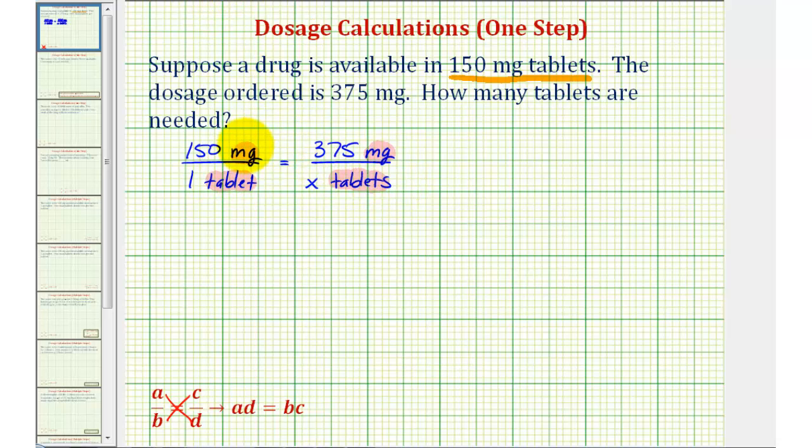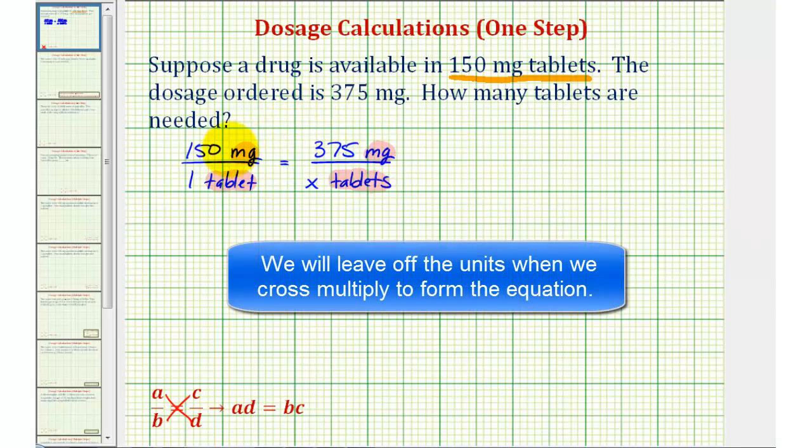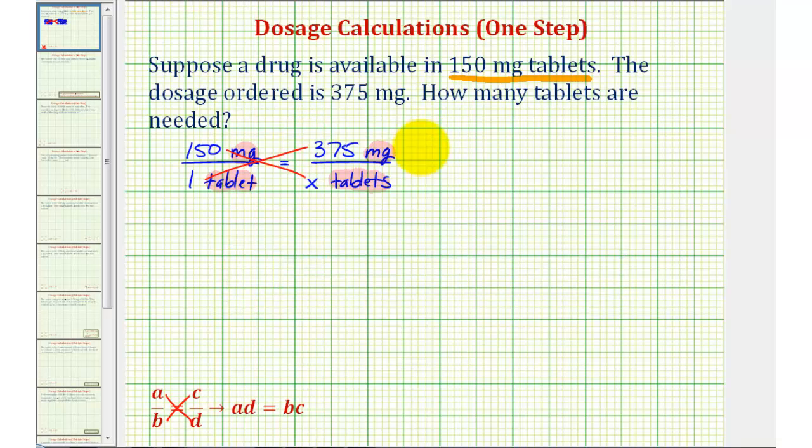When we cross multiply, it doesn't matter which cross product we do first. I prefer to find the cross product containing the variable. So 150 times X must equal 1 times 375. Again, 150 times X is 150X, which must equal 1 times 375. That's 375. Notice how when cross multiplying, we do leave the units off to simplify our equation.